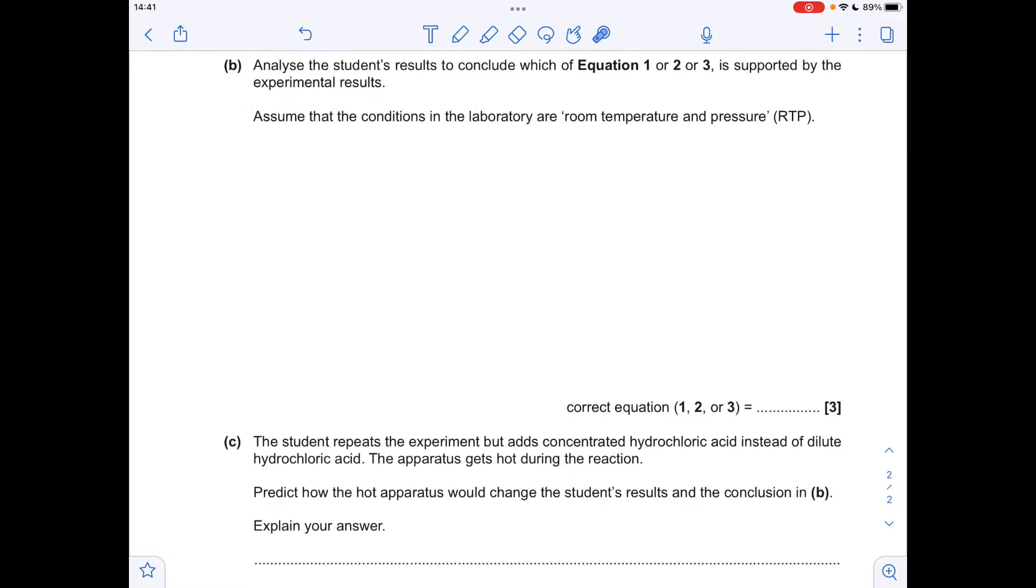Moving on to part B where we've got to analyze the student's results and ultimately establish the mole ratio in the equation so we can decide which equation one to three is correct. So the first thing I'm going to do is work out the moles of the europium used and the moles of hydrogen produced.